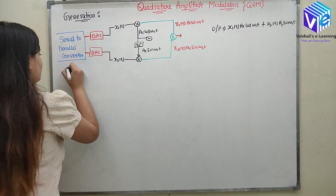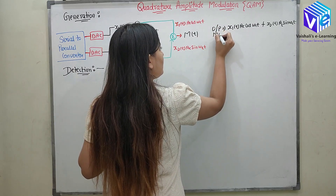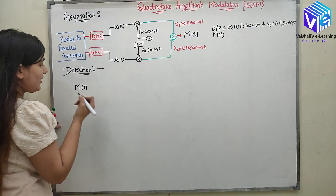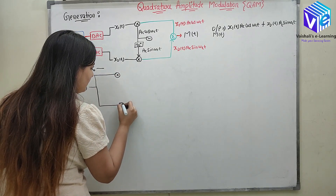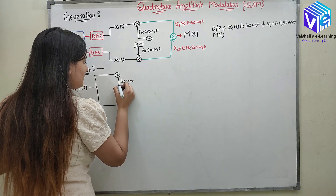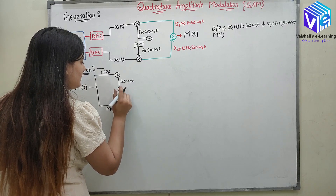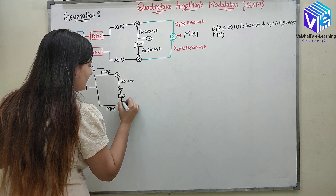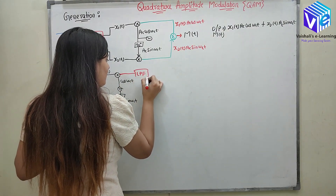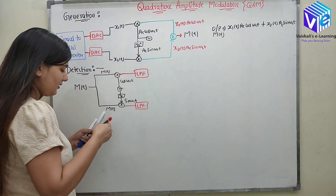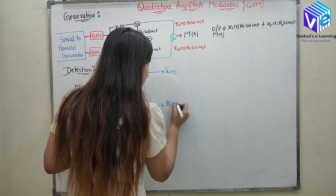Now talking about the detection. In the detection, the input is my m(t). This output is going to the detection input. Here it's a synchronous detector. Again, I will be having two product modulators — this one is multiplied by cos(ωcT) and here also I am getting m(t). From the oscillator, I can generate cos(ωcT) and after a 90 degree phase shift I will get sin(ωcT). After that, we pass it through the low pass filter, and from here we get the estimate of X1T and from here we get the estimate of X2T.